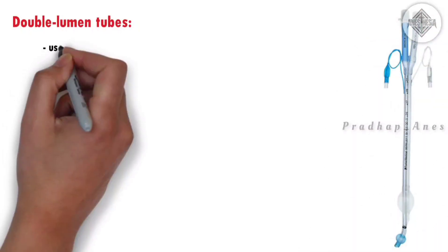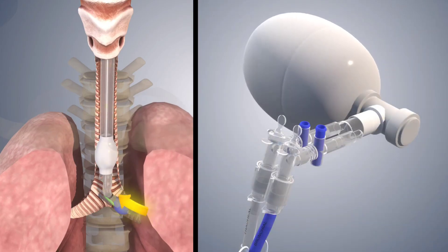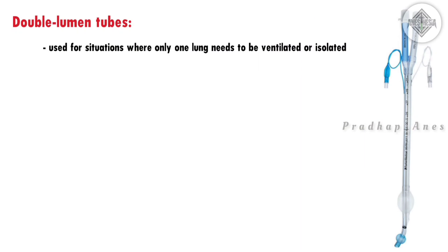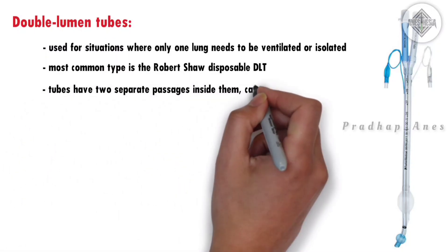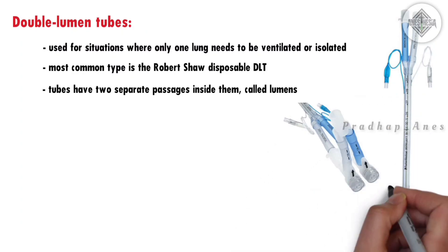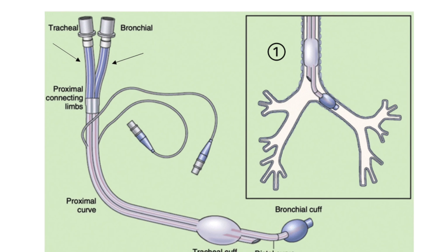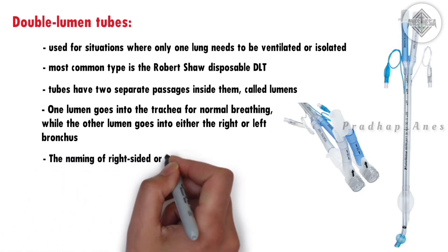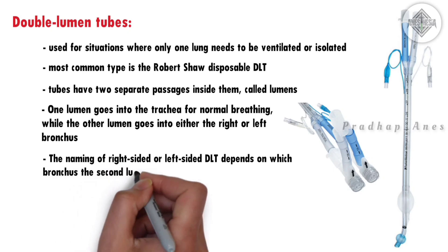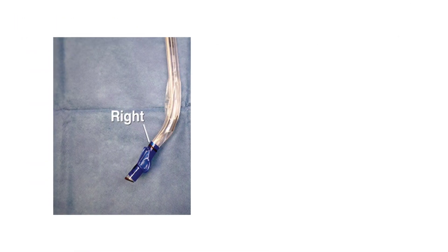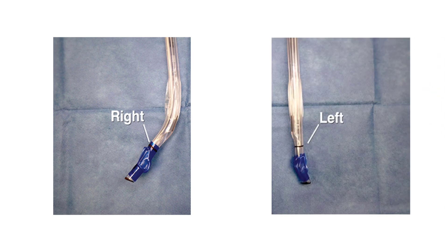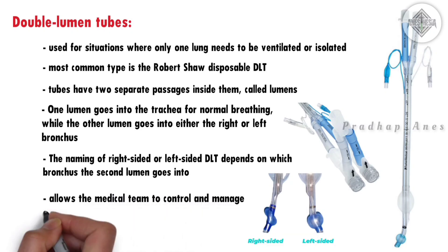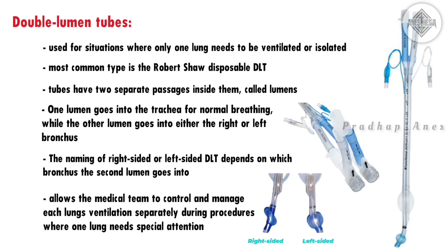Double-lumen tubes are special tubes used for situations where only one lung needs to be ventilated or isolated. The most common type is the Robert Shaw disposable DLT. These tubes have two separate passages inside them, called lumens. One lumen goes into the trachea for normal breathing, while the other lumen goes into either the right or left bronchus. The naming of right-sided or left-sided DLT depends on which bronchus the second lumen enters, allowing the medical team to control each lung's ventilation separately.